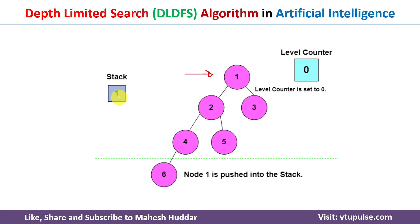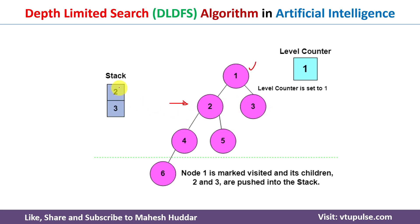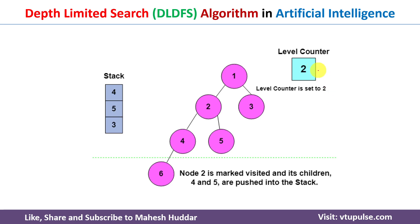We remove the first element from the stack — node 1 — and expand it, getting children 2 and 3. Both are added to the stack. The level is now 1. We take node 2 from the stack and expand it, getting children 4 and 5. The stack now contains: 4, 5, 3, and the level counter is set to 2. We take node 4 and try to expand it, but the depth is already at the limit of 2, so node 6 is not added to the stack.